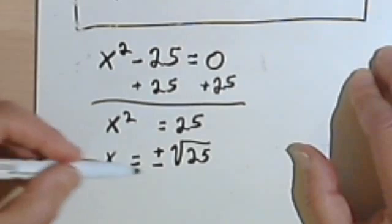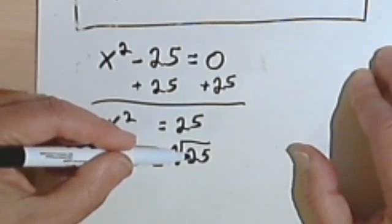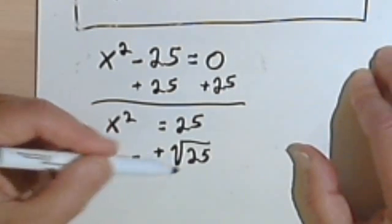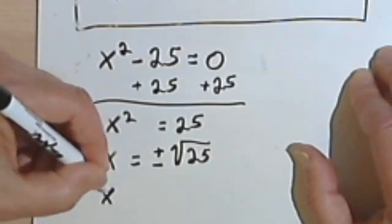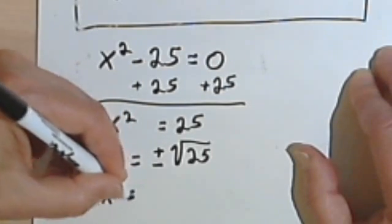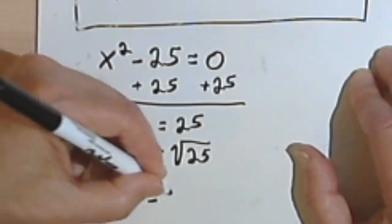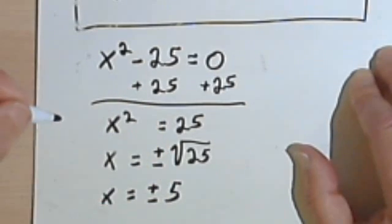In other words, x could equal the positive square root of 25, or it could equal the negative square root of 25. Now the square root of 25 is 5, so I'm going to have x equals plus or minus 5.